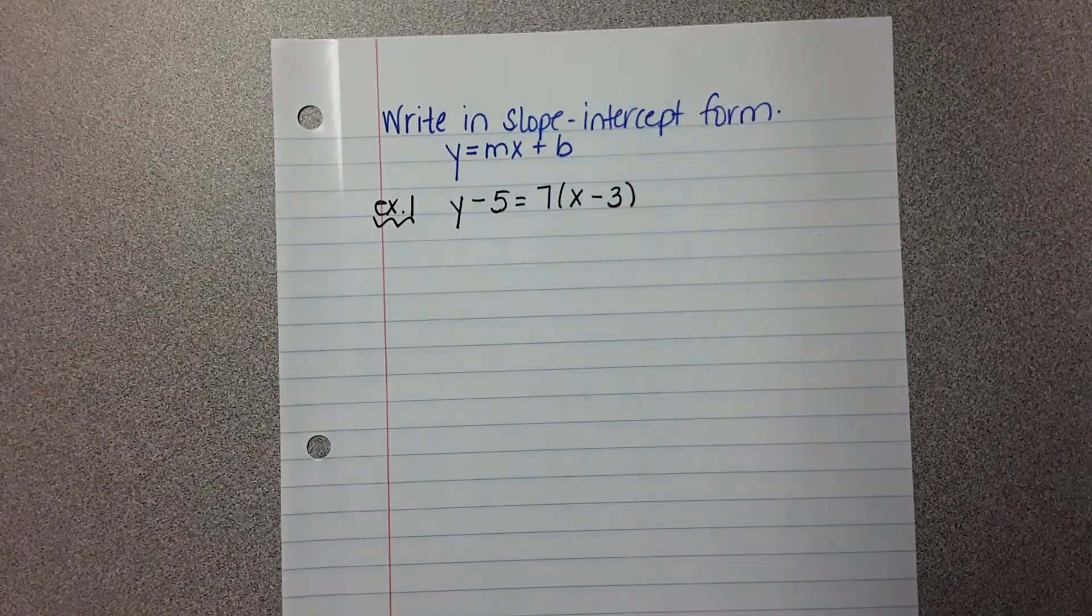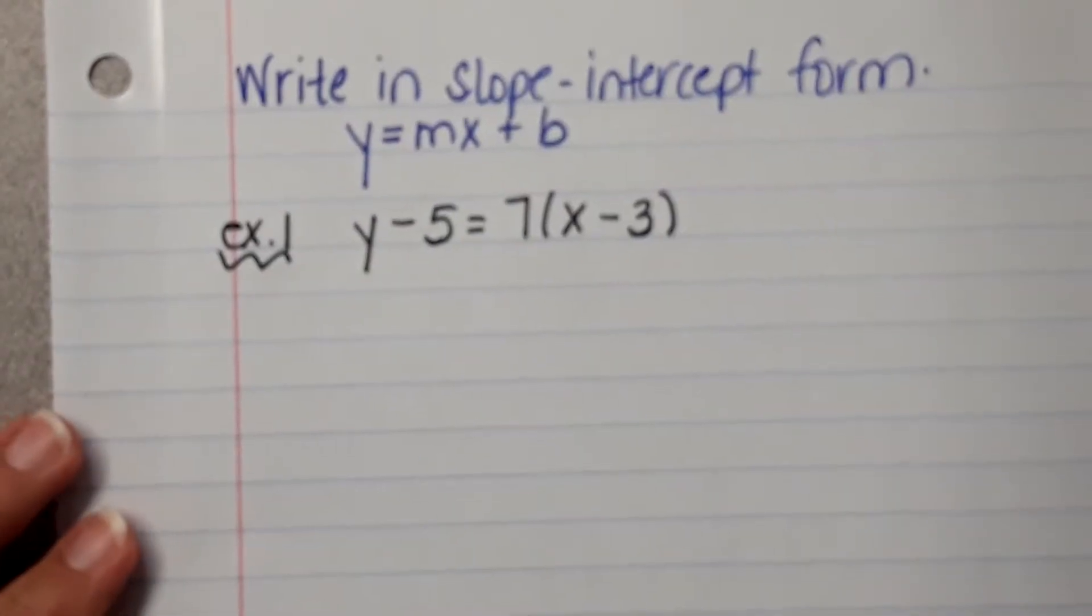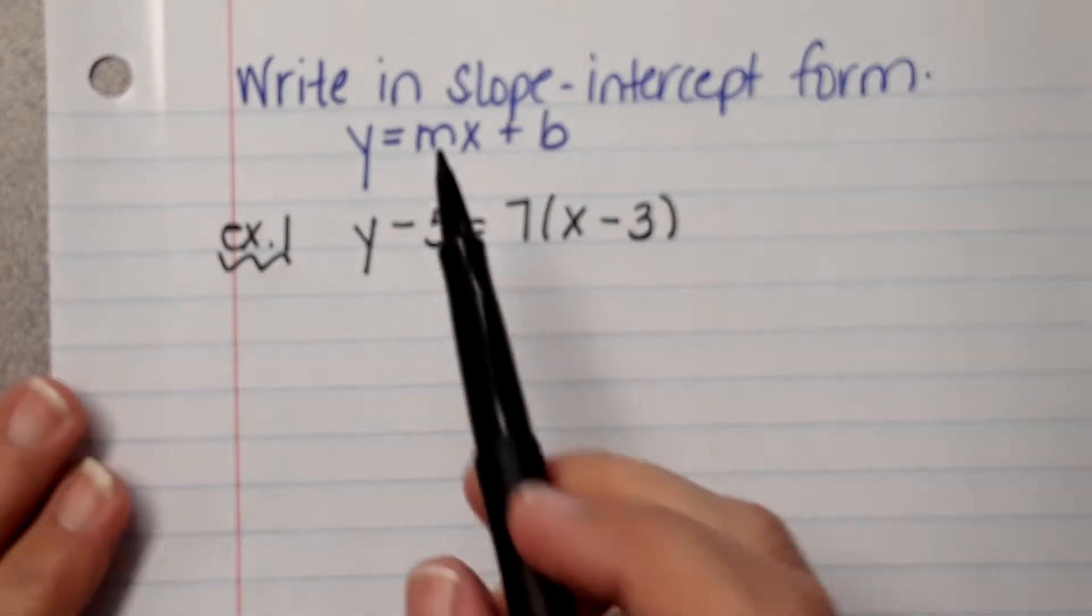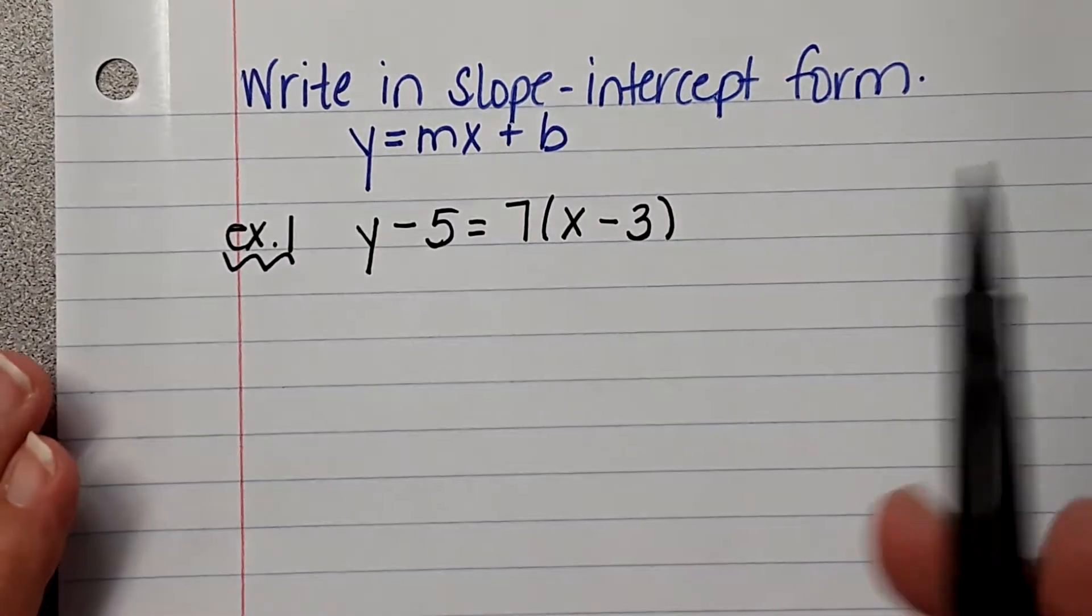So here is this equation, okay? So it is in point slope form, which we just got done doing, and now what we're going to do is we are going to write it in slope intercept form. So what we want is we want MX plus B on the same side.